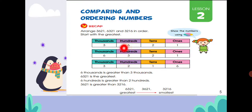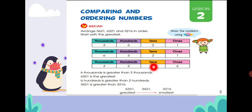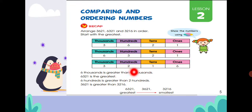Looking at the hundreds place: six hundred is here and two hundred is here — it's very clear which one is greater. Six hundred is greater, so the second value three thousand six hundred and twenty one is greater than three thousand two hundred and sixteen. Starting from greatest: six thousand three hundred and twenty one, then three thousand six hundred and twenty one, and last is three thousand two hundred and sixteen, which is the smallest.